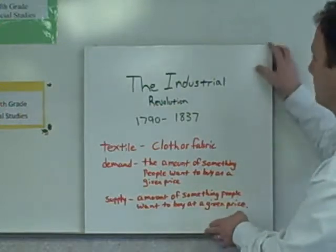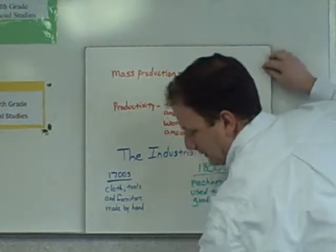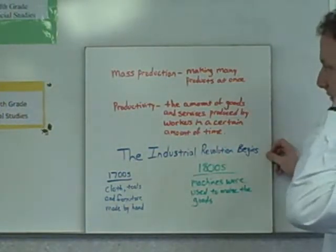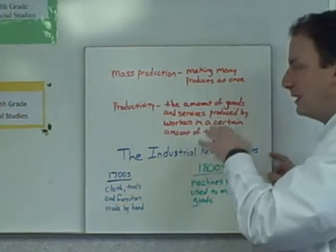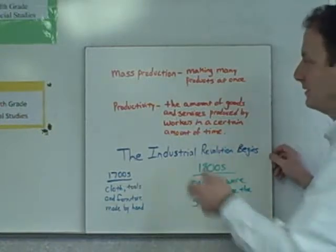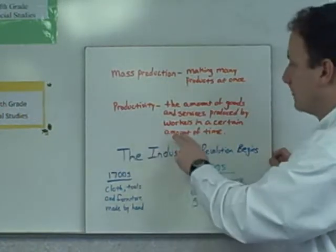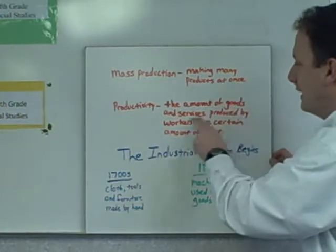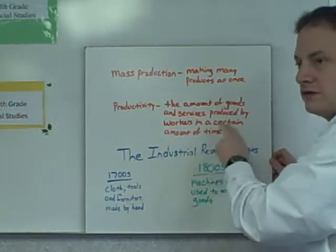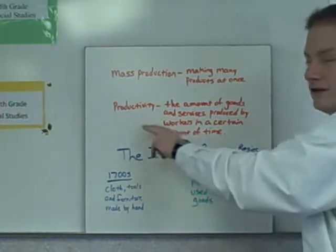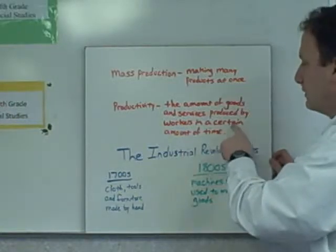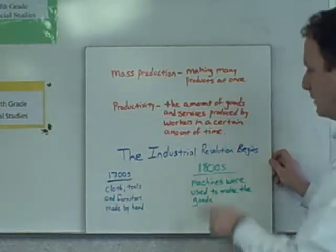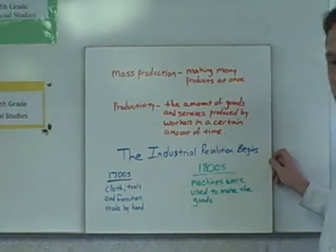Mass production means making many products at once. We're going to talk about that in just a few minutes when we talk about Eli Whitney. Productivity is the amount of goods and services produced by workers in a certain amount of time.